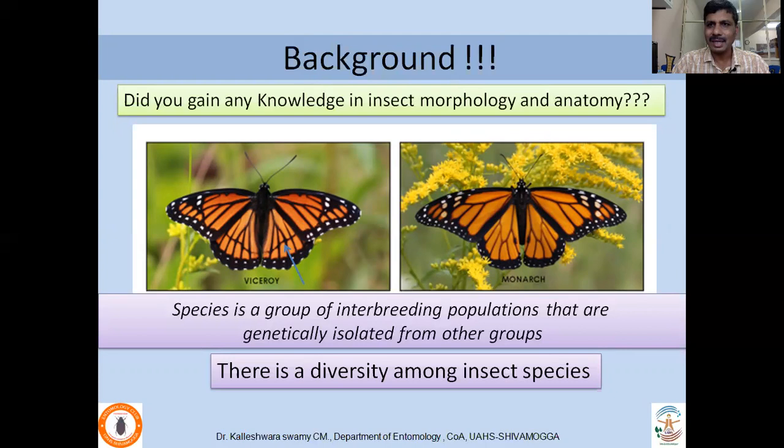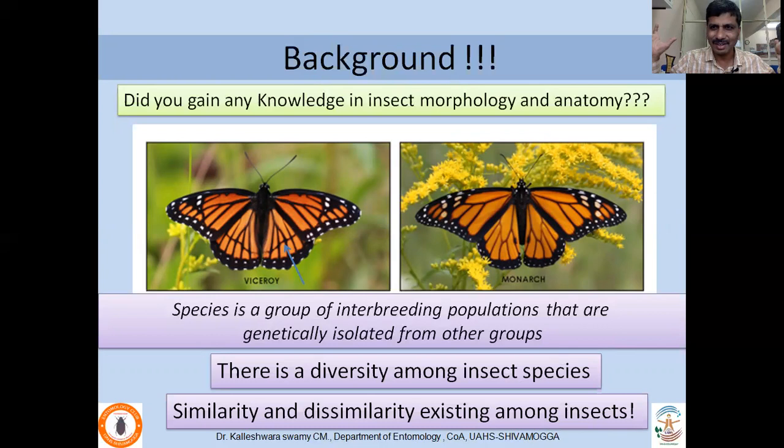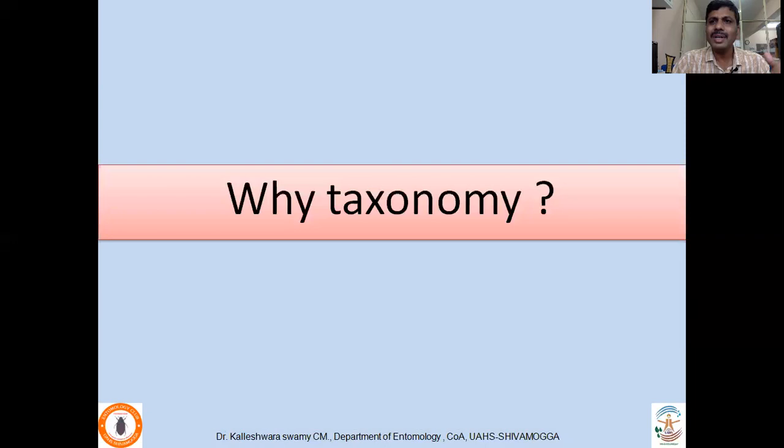There is a lot of variation. But if you look at all these different species which you come across, there is both similarity and dissimilarity existing. There is a lot of similarity, but if you specifically look into particular characters, there is a dissimilarity which can be easily identified. That is the importance of taxonomy — so why taxonomy? That I will be concentrating on in future slides.